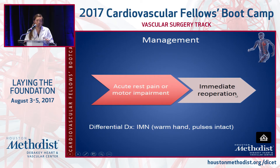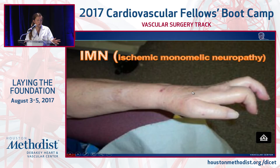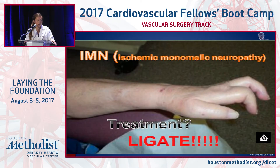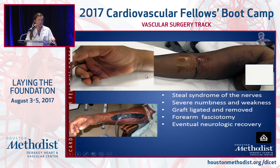If they have acute rest pain or motor impairment right after surgery — which can be difficult because most of the time these are done under regional blocks, so they go home numb and then have severe pain — if the nurse calls you for motor impairment, even if you have pulses and a warm hand, it could be IMN: ischemic monomelic neuropathy, which you have to immediately ligate. The thought is that it's a steal syndrome of the nerve — the nerve becomes ischemic before anything else, causing severe numbness, weakness, and pain, even with a palpable pulse. This patient had this, the graft was ligated and removed, he needed fasciotomies, but eventually recovered.